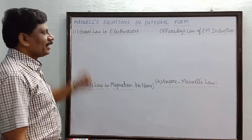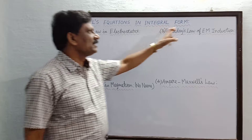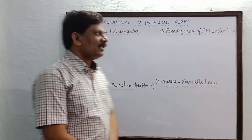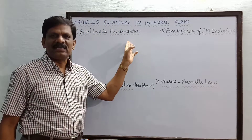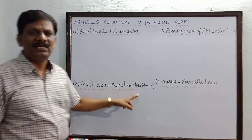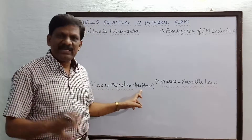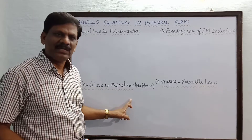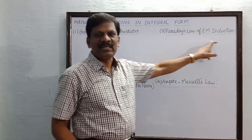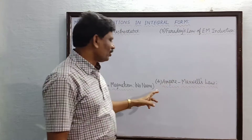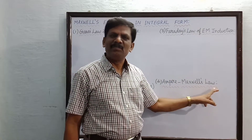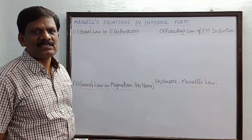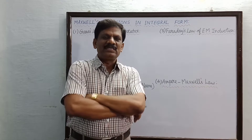Hi students, now we are going to explain Maxwell's equations in the integral form. There are four equations to be discussed. The first equation is called Gauss law in electrostatics. The second equation is given in some books as Gauss law in magnetism. The third one is Faraday's law of electromagnetic induction, and the fourth one is Ampere-Maxwell's combined law.